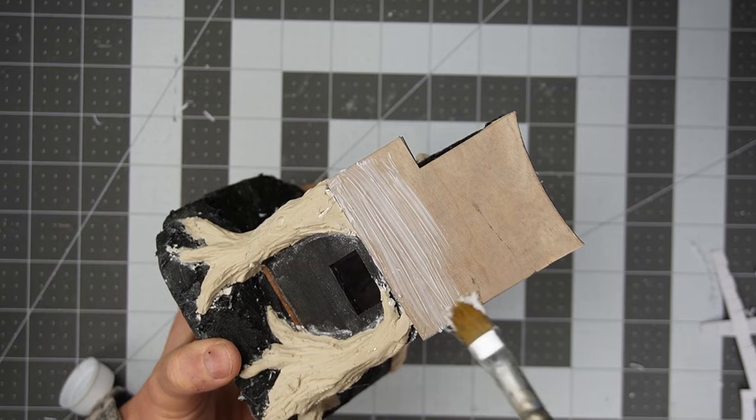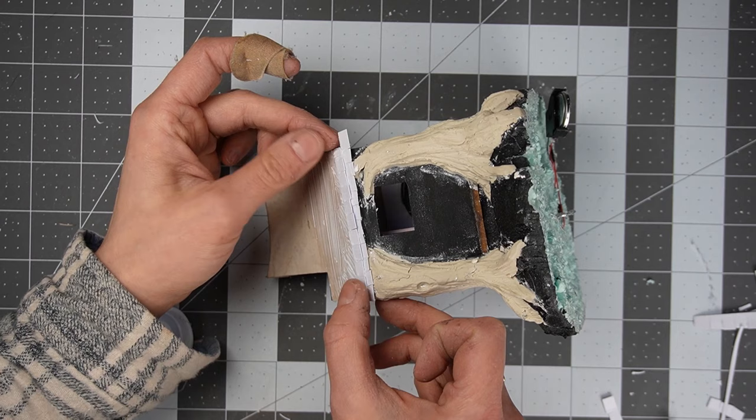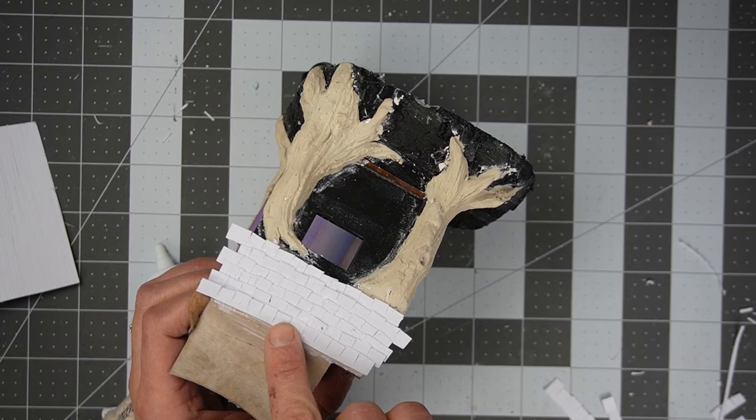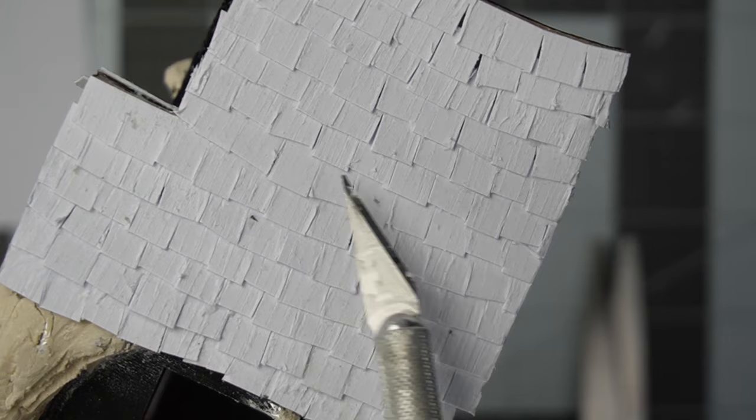I'm using some tacky glue to attach my paper strips of shingles. I'm making sure to apply them in such a way so that the pattern staggers like you would see on a brick wall. So I don't want straight lines going down my roof. I want them to stagger like this.